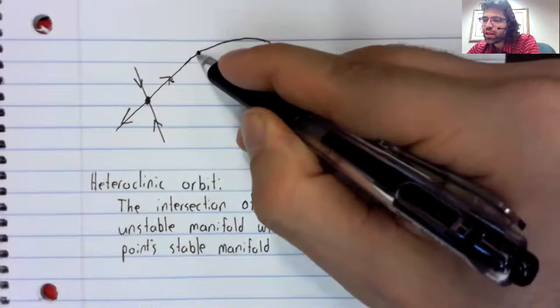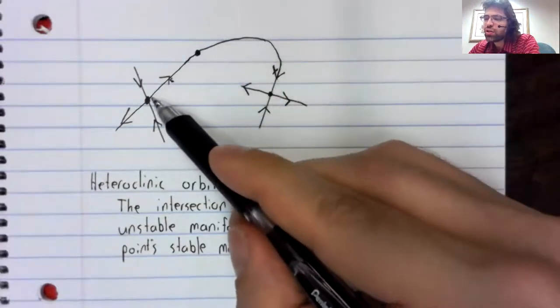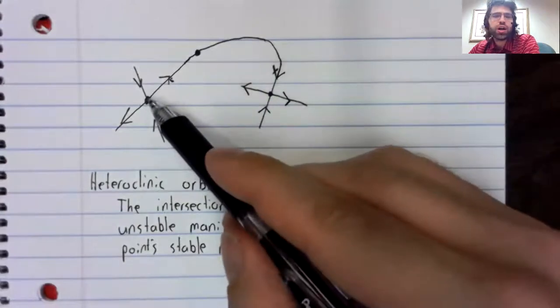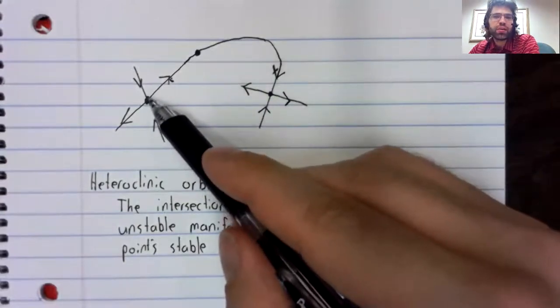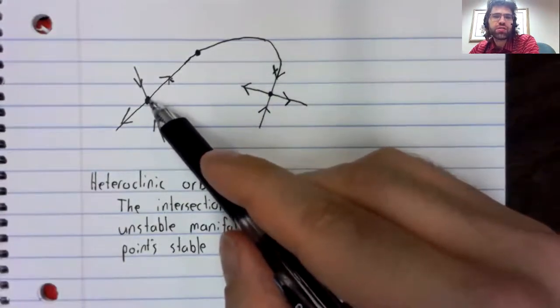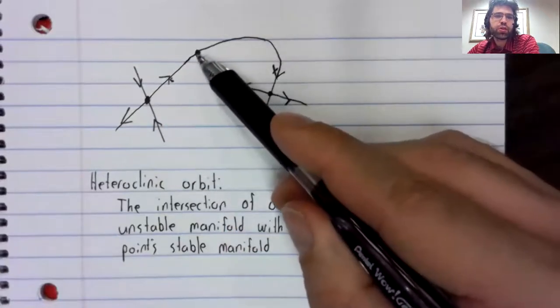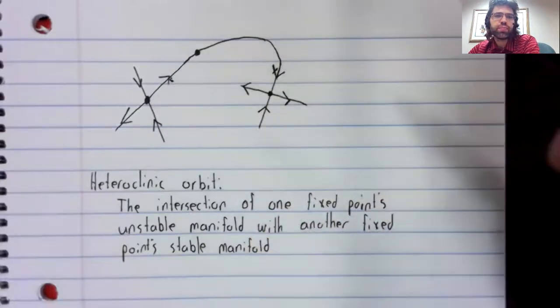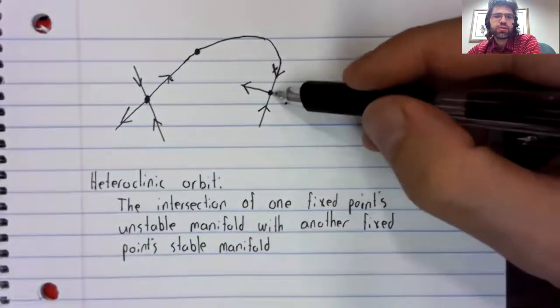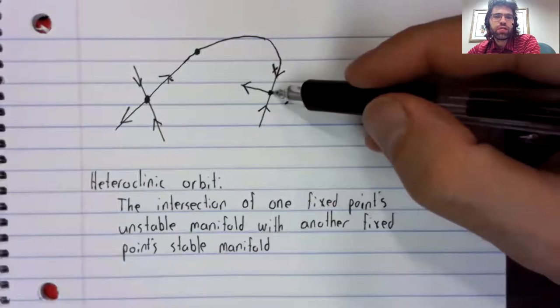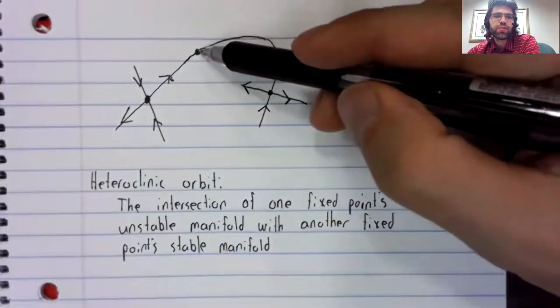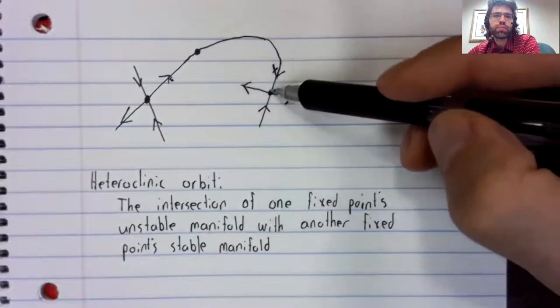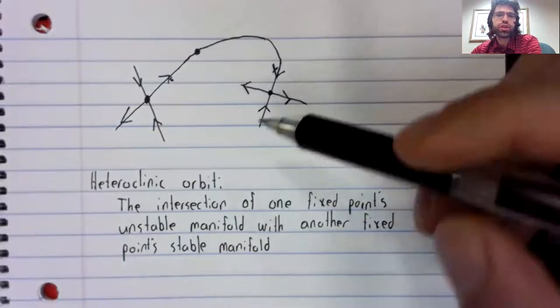If we have a point on this curve, we're in the unstable manifold of this fixed point. If we follow time backwards, we'll approach it. And we're in the stable manifold of this fixed point. If we follow time forward, we'll approach it.